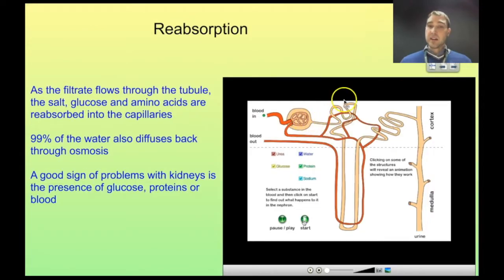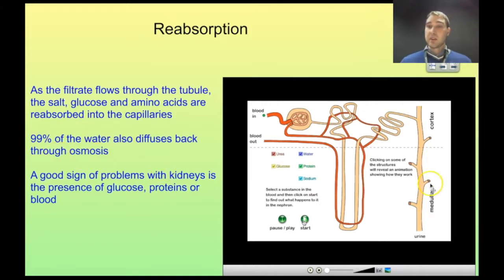As the filtrate passes along the tubule, we get reabsorption of the substances that your body still needs — they're reabsorbed back into the capillaries that follow the tubule around. Most of the water also diffuses back in. Only about 1% of the water makes its way through to the collecting duct. The presence of substances that should be reabsorbed appearing in the urine is a good sign that there's something wrong with your health.